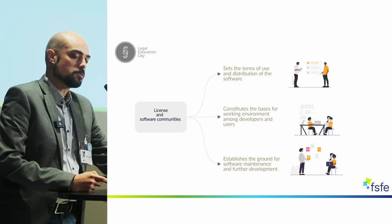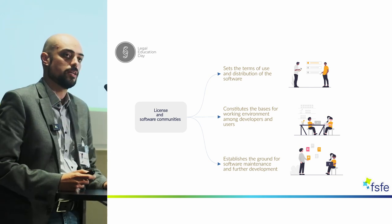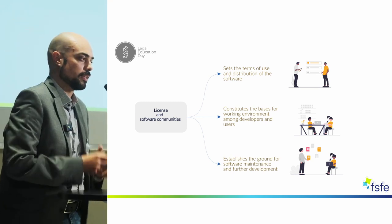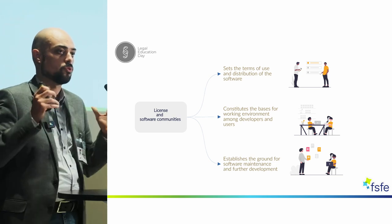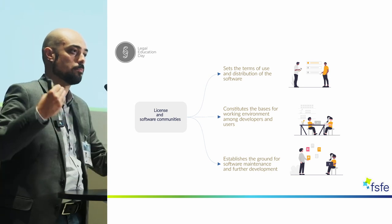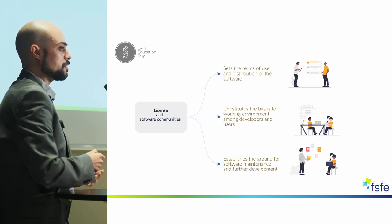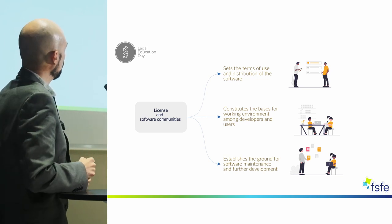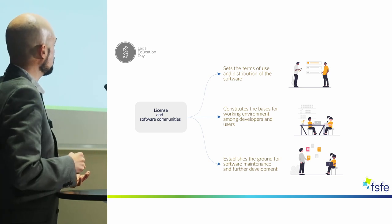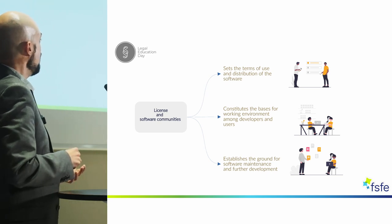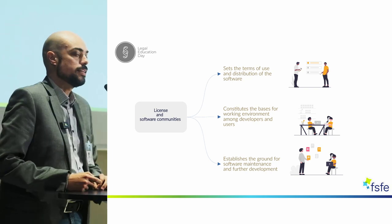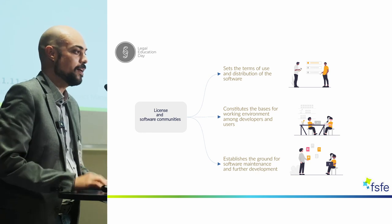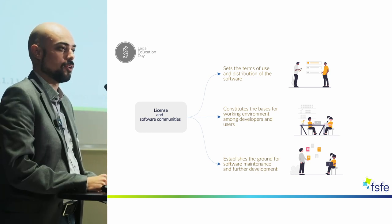In the last part of my presentation, when we talk about free and open source licensing, we are talking about sets of permissions and authorizations. But the license itself is very important for the software community. That's why we are so concerned about the type of license — because the license is sometimes considered as the constitution of communities. It sets the terms of use and distribution of software, constitutes the basis for the working environment among developers and users, and establishes the ground for software maintenance and further development. I hope we made some progress in making license a little bit clearer. Thank you very much for your attention and I hope to engage with your questions.